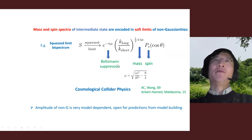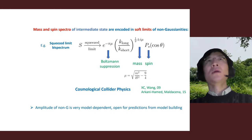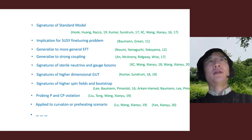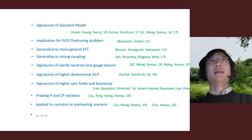In this limit, the non-Gaussianities will approach a form with power-law dependence on the ratio of the two modes k_long divided by k_short. The power of this power law encodes the mass spectrum, and the angular dependence — where theta is the angle between k_long and k_short — is a Legendre polynomial with index encoding spin information. Overall there is an amplitude penalized by Boltzmann suppression if the mass is much larger than the Hubble scale. This has been called the cosmological collider physics program, and it features model-independent signatures, though the amplitude of non-Gaussianities is very model dependent.